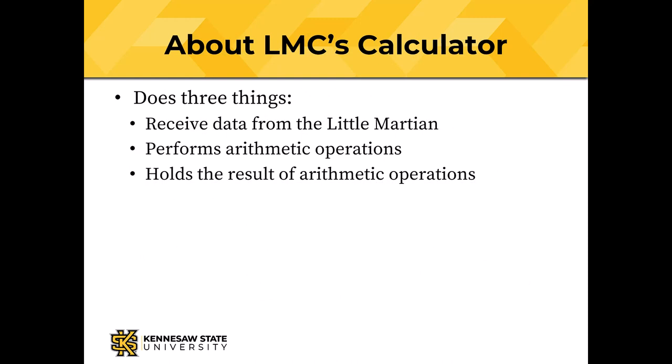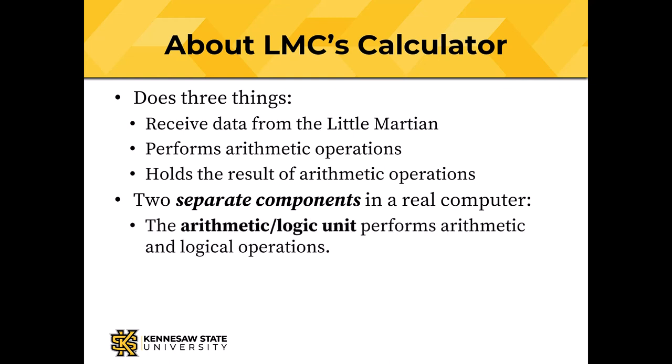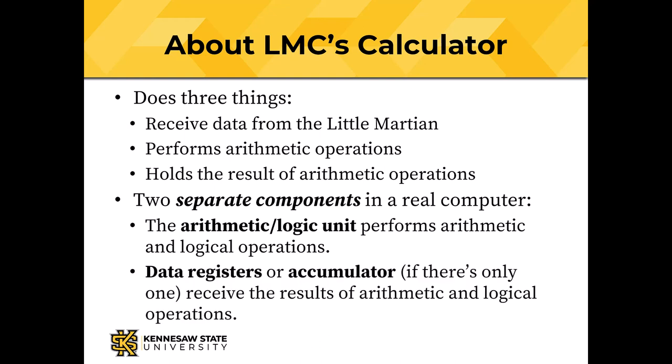The calculator represented the arithmetic logic unit in the little Martian computer. That calculator could do three things: receive data from the little Martian (keyboard input), perform arithmetic operations like addition and subtraction, and hold the result in its window. In a real computer, two separate components do that. The arithmetic and logic unit performs the arithmetic and logic operations, and the data registers — or the accumulator if there's only one — receives the results.